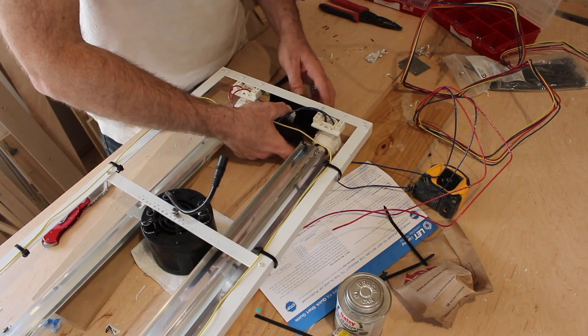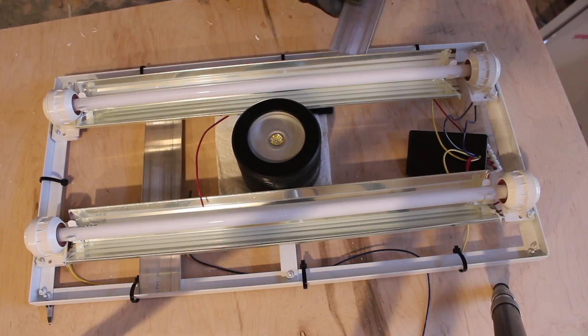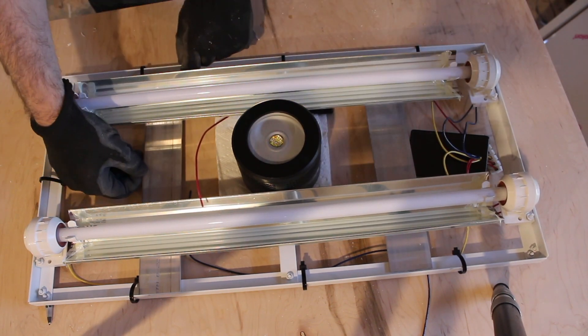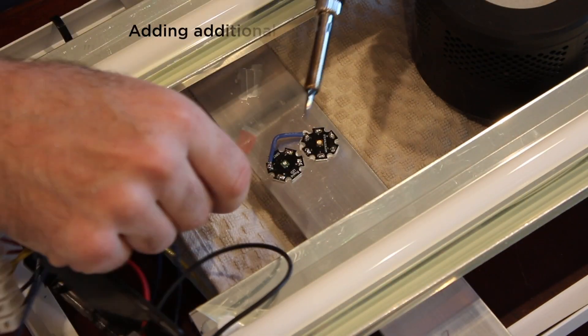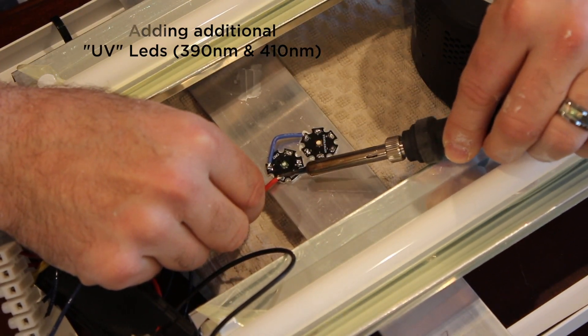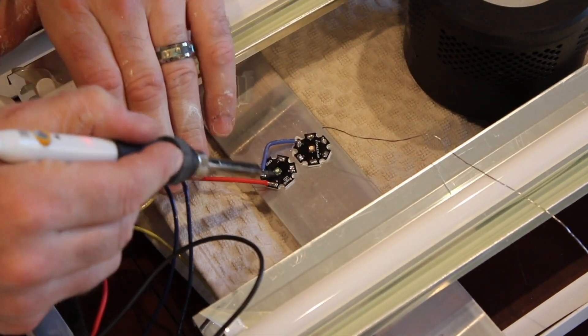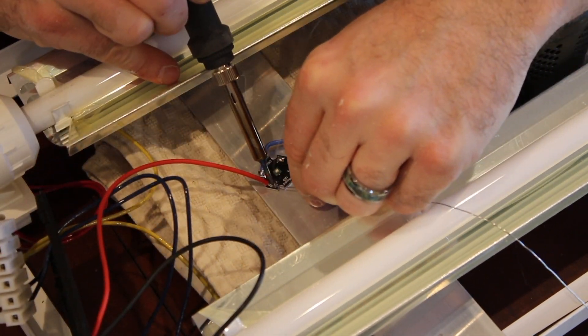I typically quarantine coral for between 30 and 45 days, and that tends to be enough time for any of the macro pests that you can see with the naked eye, such as aiptasia, bubble algae, anything else like that, to crop up and you can take care of it.